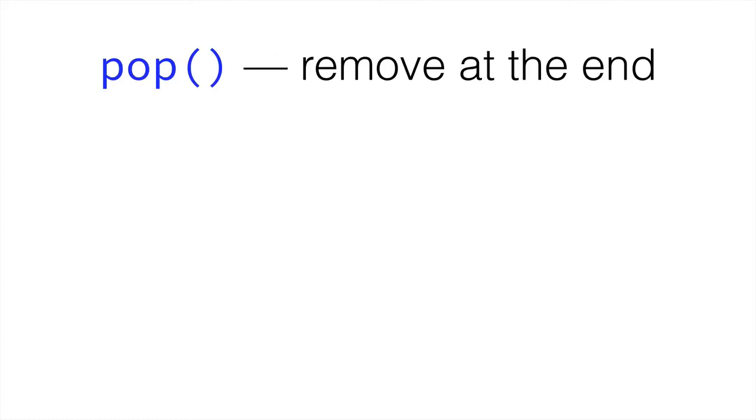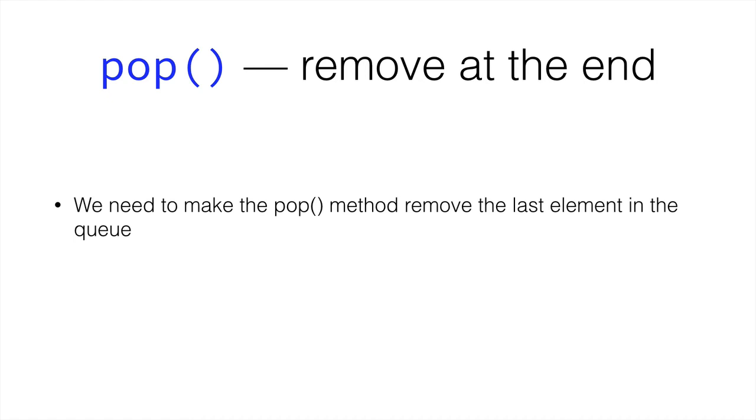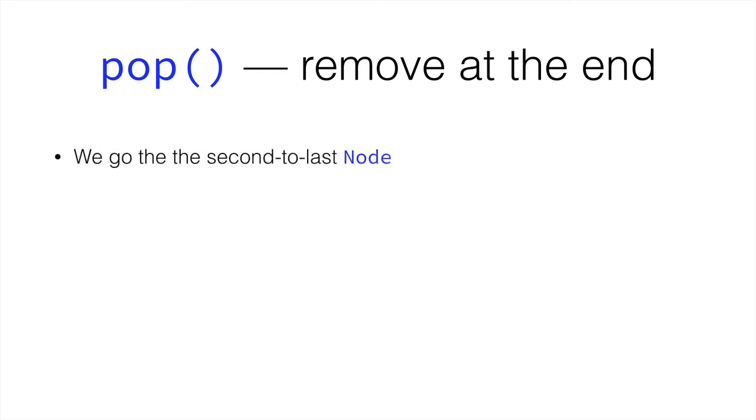So pop is going to remove at the end. We've already got push because we've programmed that in the previous couple of videos. So let's create pop. Pop is going to remove the last element in the queue. So how do we do this? We go to the second to last node